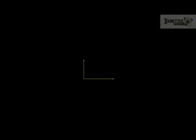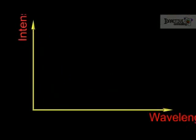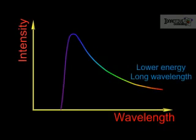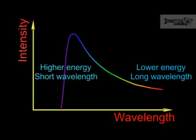Bremsstrahlung radiation has a continuous spectrum corresponding to electrons losing different fractions of their initial kinetic energy. When the electron loses a small amount of energy, a long wavelength X-ray is produced. When it loses a larger amount of energy, shorter wavelength X-rays are produced. The spectrum has a minimum wavelength below which X-rays are not produced. This corresponds to the highest energy X-rays which are produced when the electron loses all its kinetic energy.